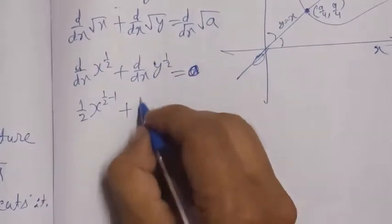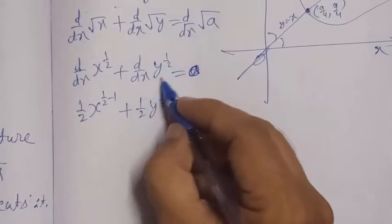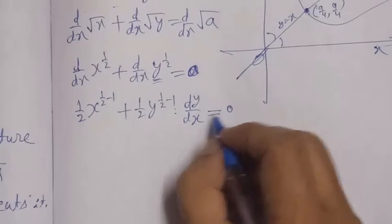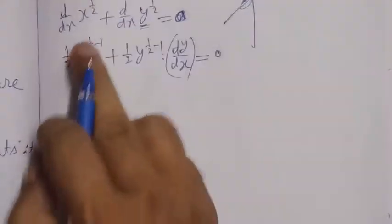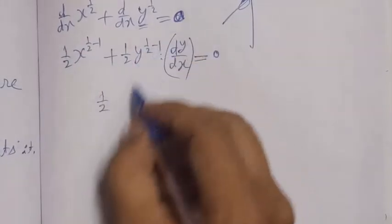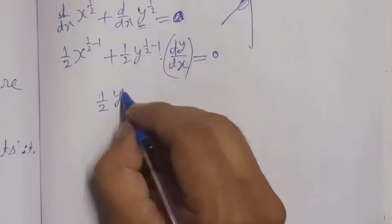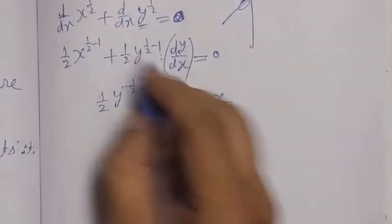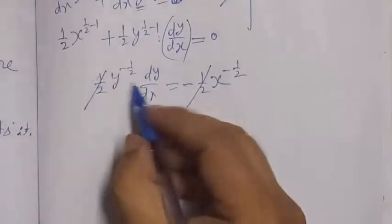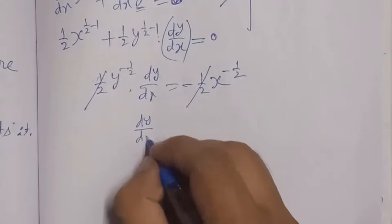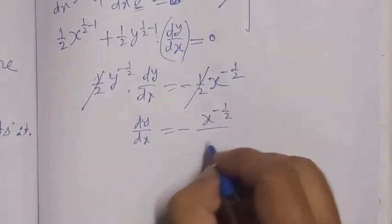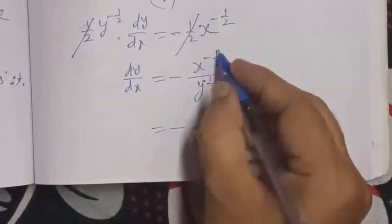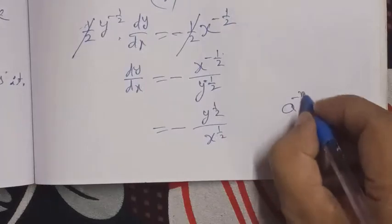Applying the power rule: (1/2)x^(−1/2) + (1/2)y^(−1/2) · dy/dx = 0. Transposing, we get (1/2)y^(−1/2) · dy/dx = −(1/2)x^(−1/2). Solving for dy/dx: dy/dx = −y^(1/2) / x^(1/2), or equivalently −√y / √x.